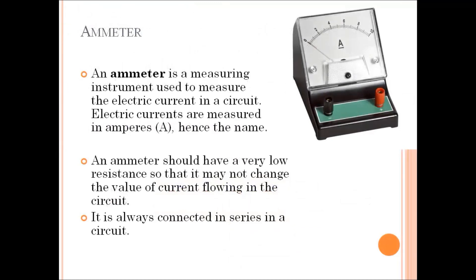Ammeter is a device used for measuring the electric current that flows through a given circuit. Some important points: an ammeter should have a very low resistance so that it may not change the value of current flowing in the circuit. It is always connected in series in a circuit.